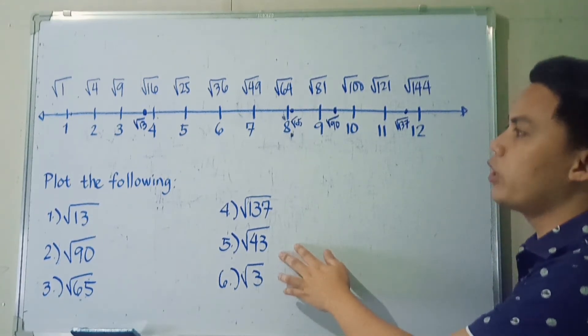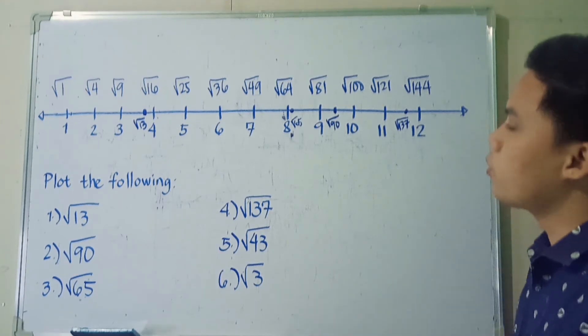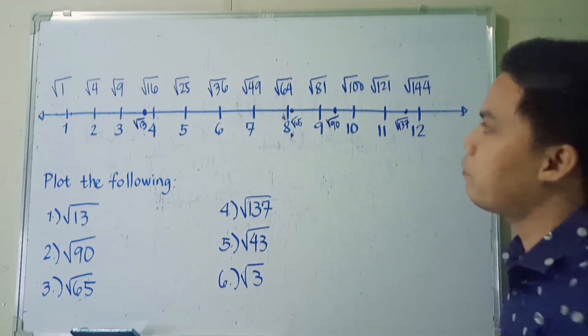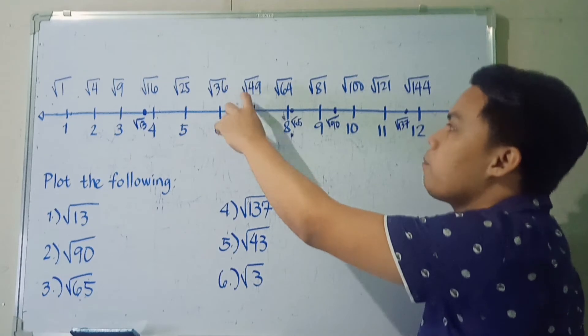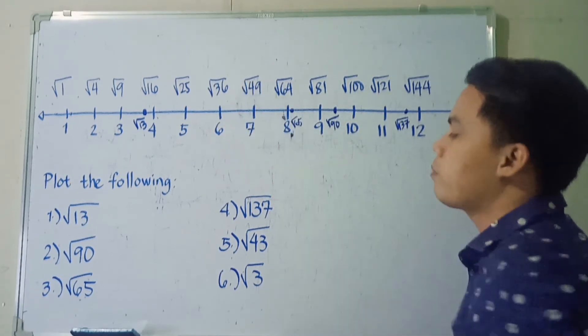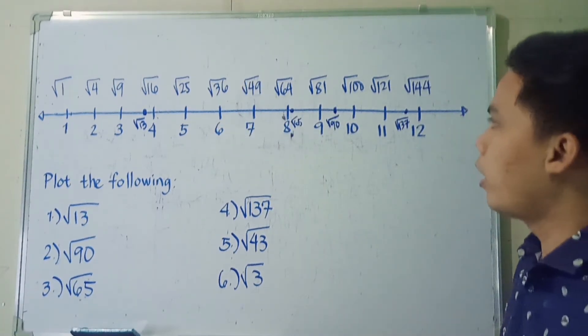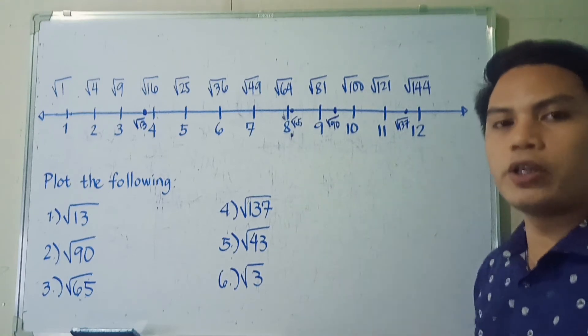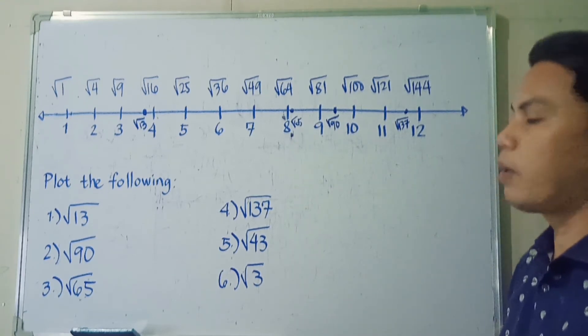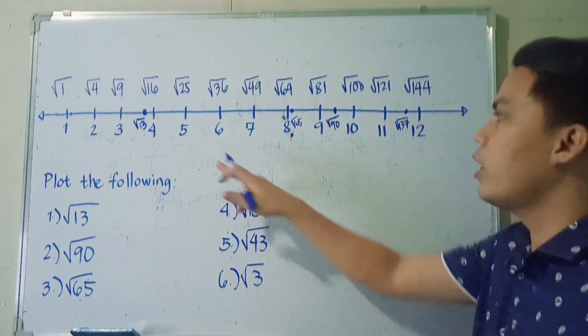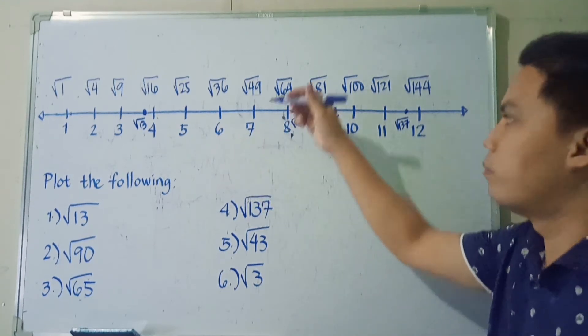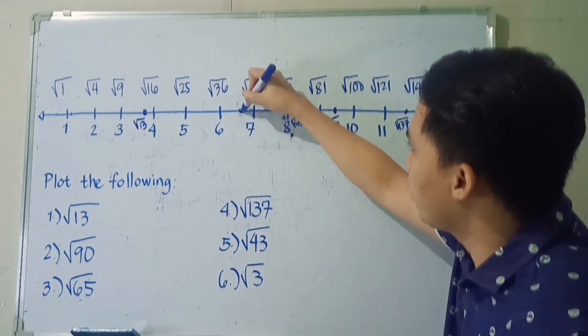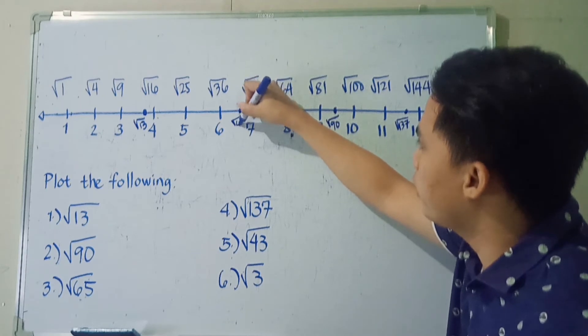Then next, we have square root of 43. Square root of 43 is between the perfect squares 36 and 49. And it's closer to 49 compared to 36, but it's almost at the midway between 6 and 7. So we're going to place here square root of 43.